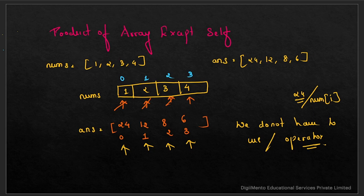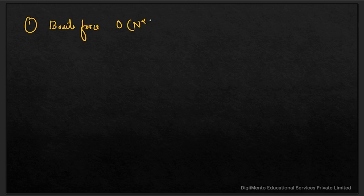To solve this without division, we need to know the prefix and suffix for each element. The prefix is the product of all elements to the left, and the suffix is the product of all elements to the right. Let's first see the brute force approach, which takes O(n²) time complexity.